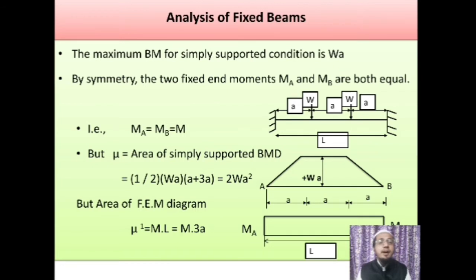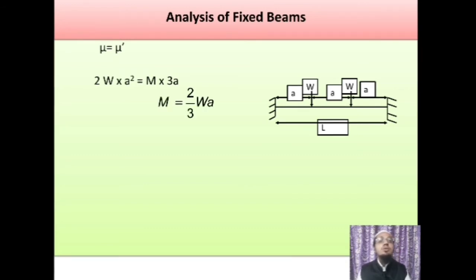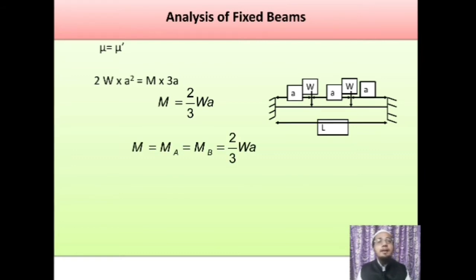Since mu and mu dash diagrams are equal — as discussed in previous sessions — equating mu equals mu dash gives 2WA squared equals M into 3A. Solving, we get M equals two-thirds of WA. This is the fixed end moment. So MA equals MB equals M equals two-thirds of WA. Note it down.